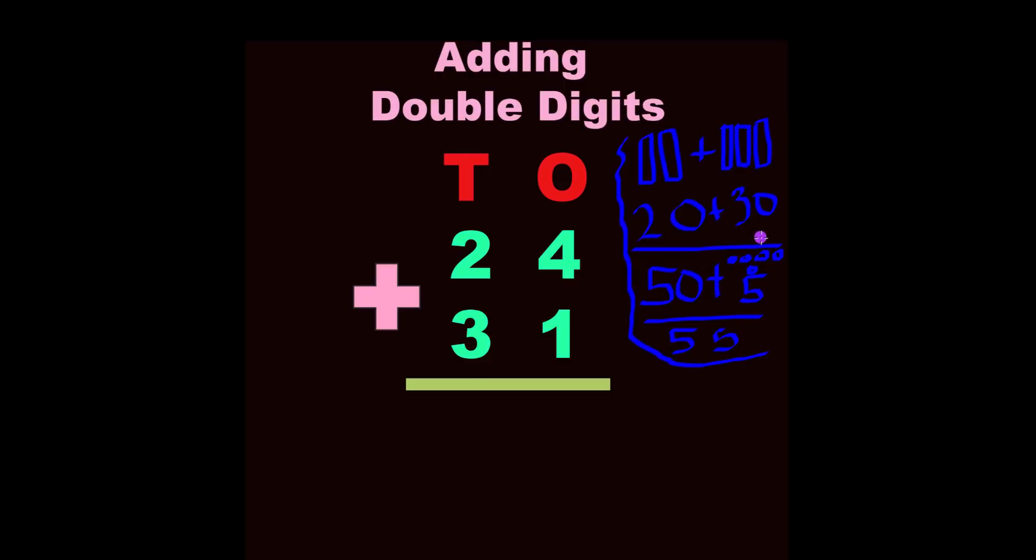And then you bring down the answer. We found out that those ten sticks equaled up, or those tens equaled up to 50. Then we added the ones. Remember that O means ones. And we drew out our ones and counted our ones, and it equals 5. So now we know that 50 plus 5 is 55.